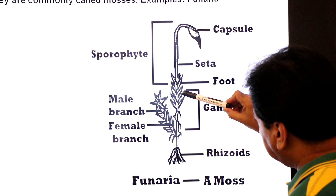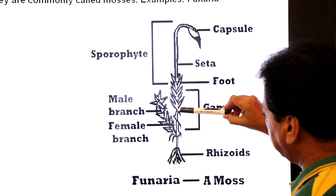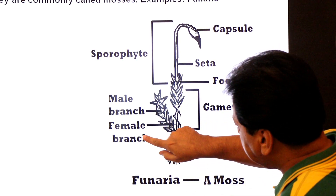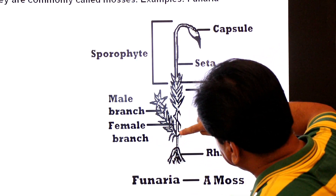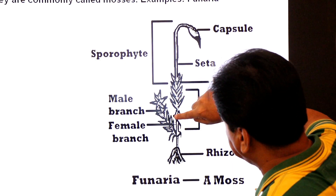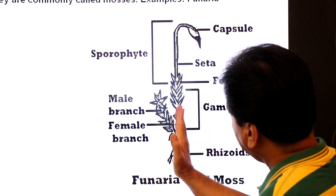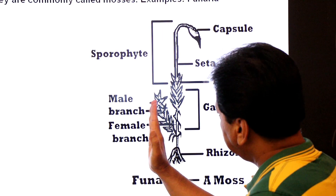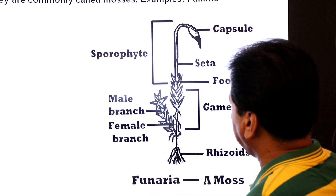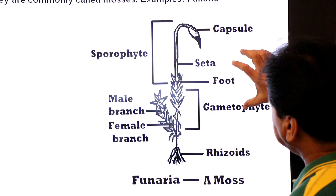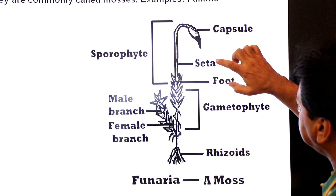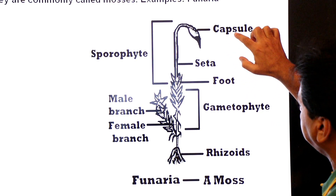This is a female gametophyte — the gametophyte is the dominant generation. The central branch of Funeria is the female branch, bearing archegonia. The lateral branch is the male branch, bearing antheridia. Their sporophyte has three parts: the foot, the seta, and the capsule.